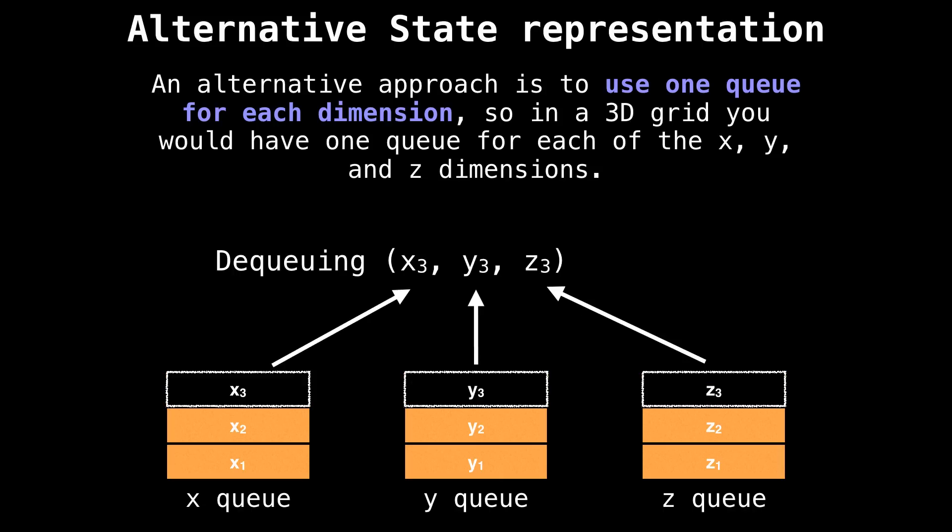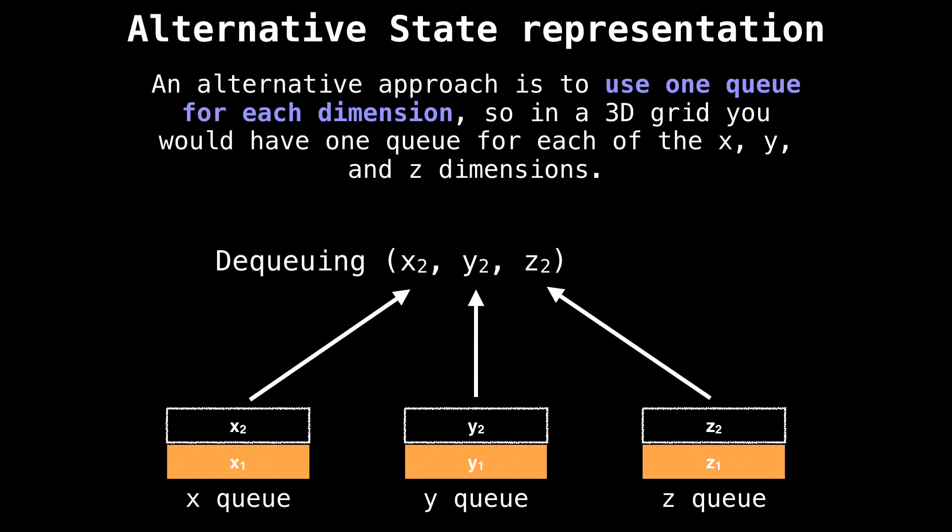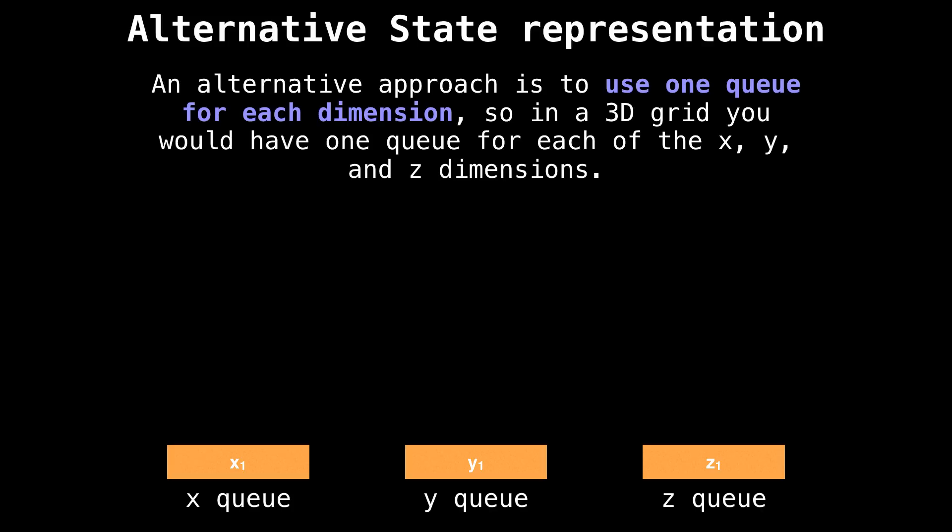So when I dequeue or pull elements from the queue, I need to remove an element from each of these queues. I prefer this representation when working with multi-dimensional coordinates, which is why I want to share it. Try it out and see if it works for you.